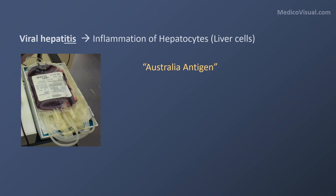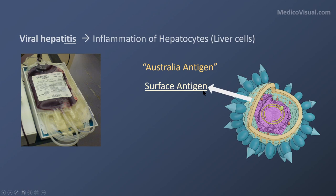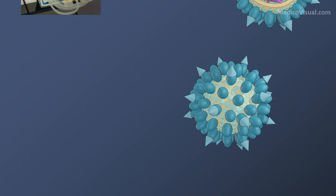At that time they had no idea what this Australia antigen actually was. They thought maybe it was an endogenous protein produced in response to frequent blood transfusion. But now we know that the Australia antigen is actually the surface protein or surface antigen of Hepatitis B Virus. At that time, Hepatitis B Virus had not yet been discovered.